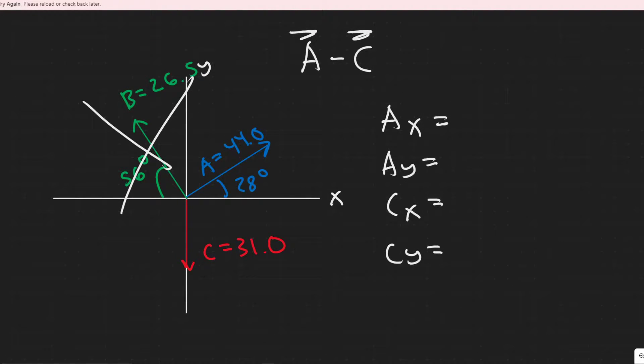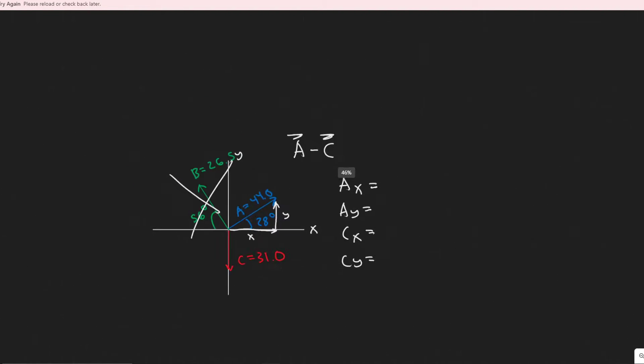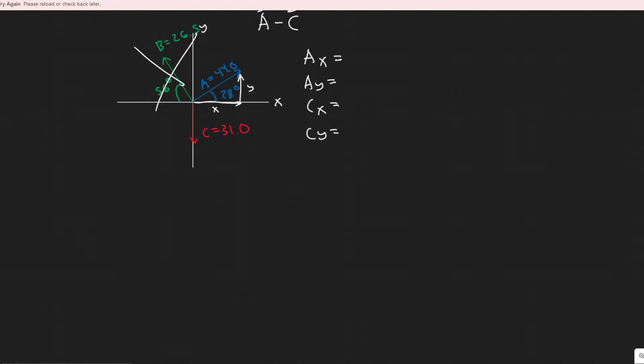So we know that A is this right here, 44 at an angle of 28. So how do we find the x component and the y component of that? When I'm referring to x, x is basically along this way, and the y would be along this way. So the way I like to draw it is like this, we have x and y. So we want to find the x component and y component, where this is the y because it's in the y direction, and x is in this x direction.